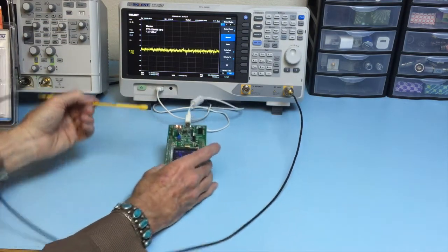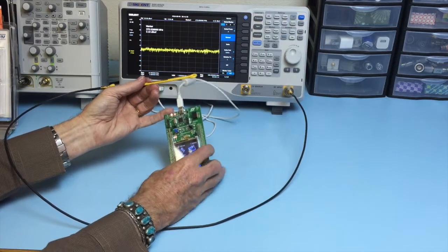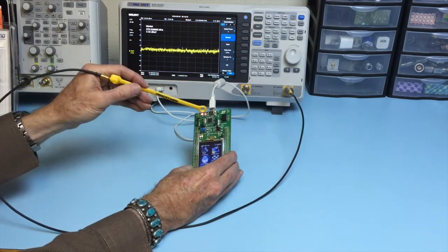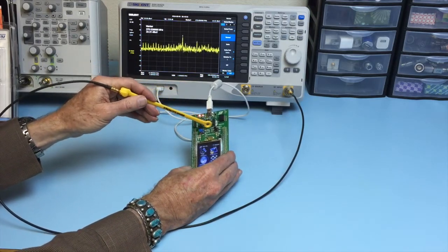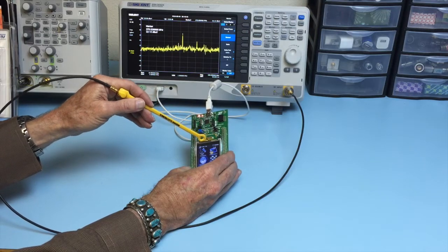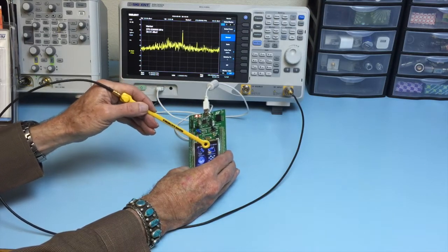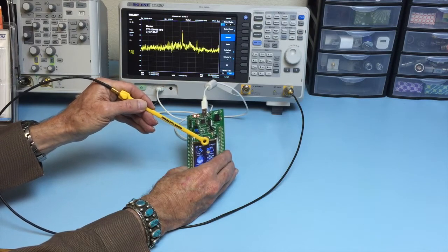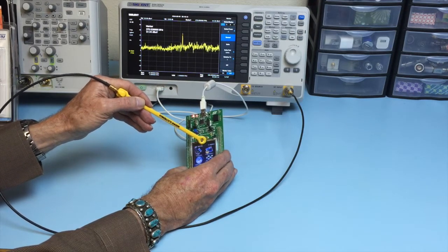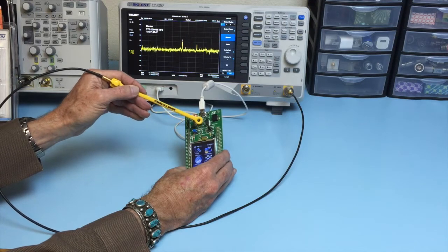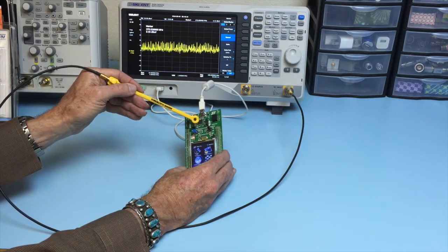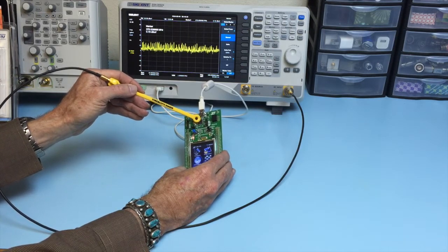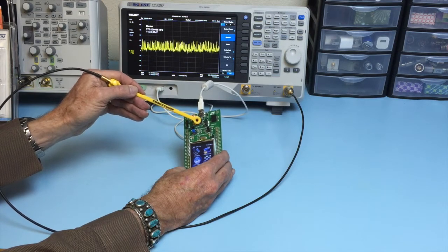So the first thing I do is take the board and just probe around to see where some of the high harmonic content is located. You can see a lot of the digital noise in the display here.